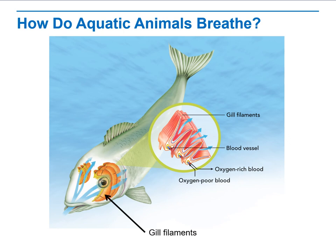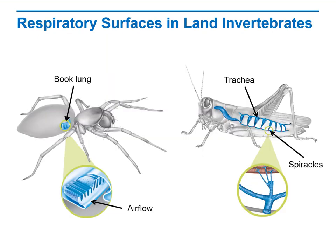As you can see, the gill filaments are located behind the eyes, and this is where the gas exchange occurs. Also, one method of entering oxygen into the bloodstream is by using the mouth.